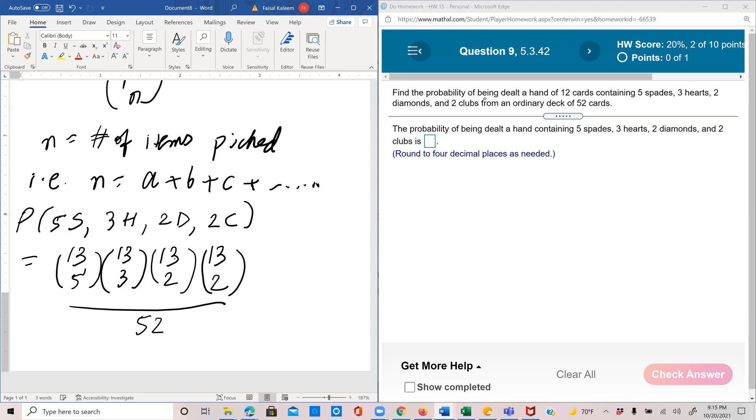And there are 52 available. So the total number of ways in which 12 cards can be picked out of 52 is 52 combination 12. So the same idea, we just extended it in more dimensions. So let's figure this out.